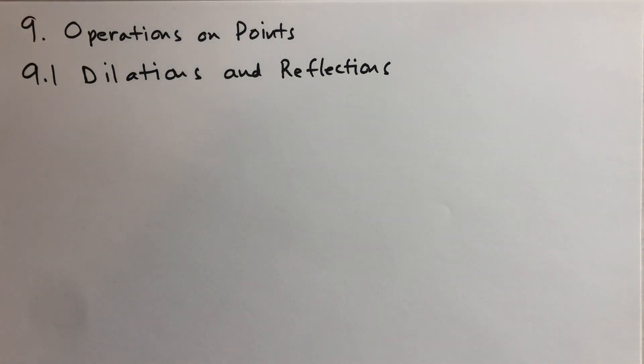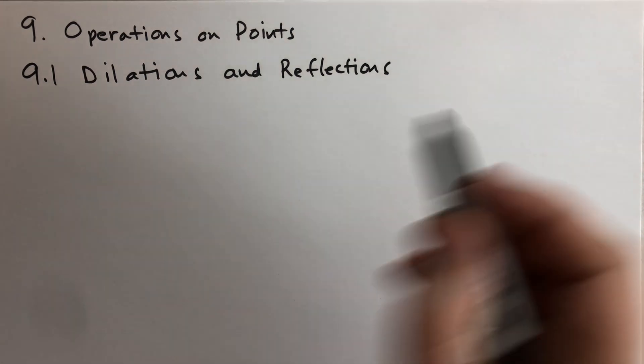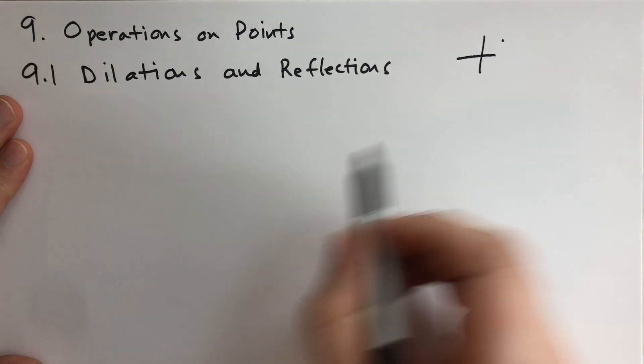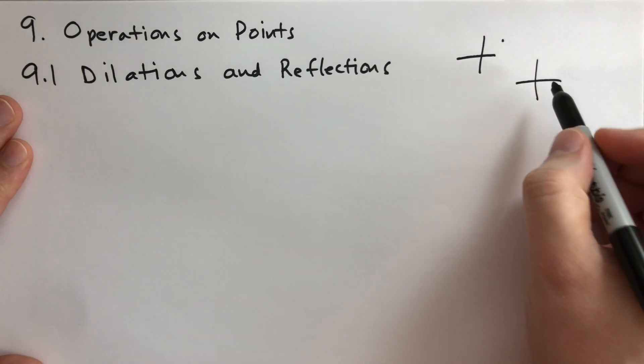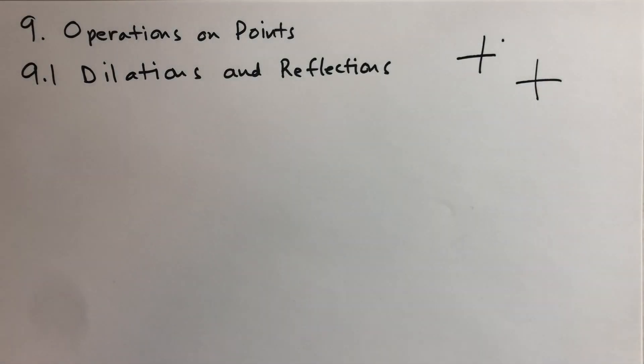So the first section here is called dilations and reflections. The note here is he says we're going to deal with a fixed coordinate system meaning from now on we're not going to think about what happens if you were to change the coordinate system, like if you have a point here and then you have another coordinate system here, like how that point's coordinates would change. We're not going to think about that. We're going to keep the coordinate system fixed. We're going to move points and we're going to see how the numbers that describe those points change because the coordinate system is fixed.